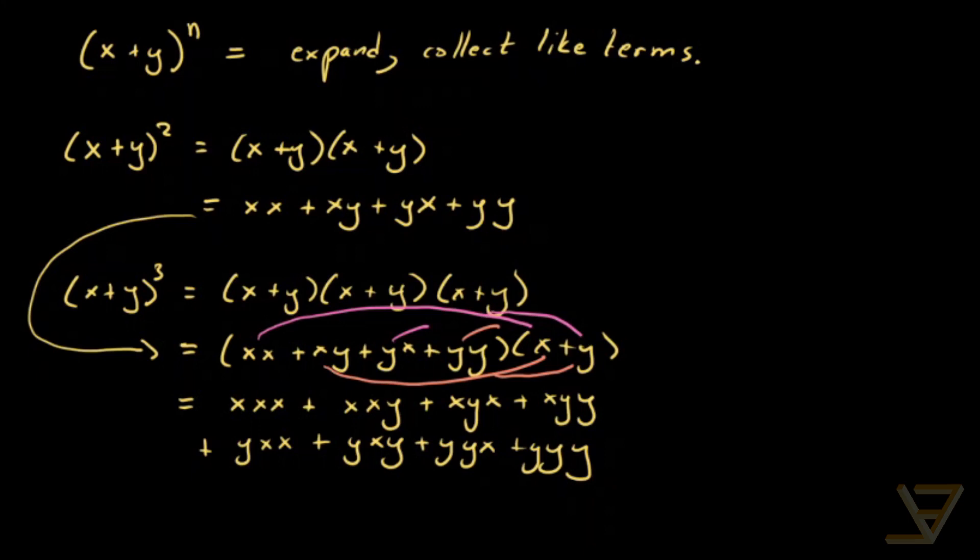So as we can see here, in this case, we have all two tuples of x's and y's. Which makes sense, it makes sense that we have four terms. Because there's two squared, which is equal to two times two. Two possibilities times two positions. And over here, we have eight terms. Which makes sense because we have two possibilities times two times two. So two to the power of three possibilities because there are three positions.